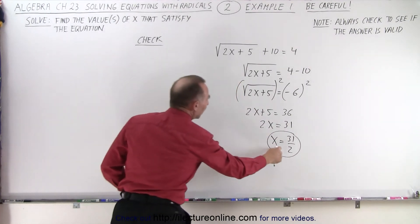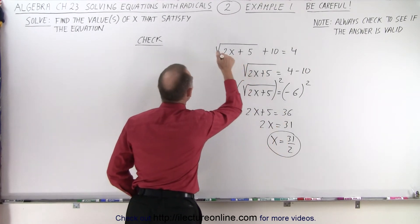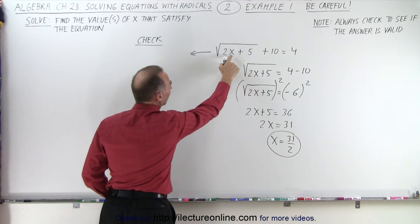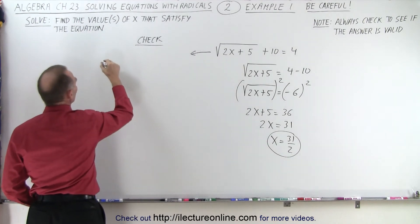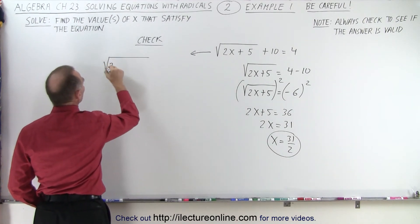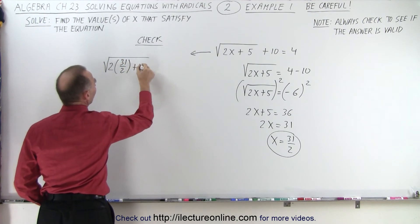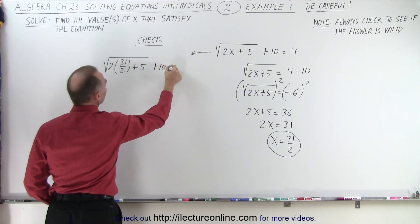How do we figure that out? We plug that back into the original equation. So we take the original equation, and instead of x, we're going to write 31 divided by 2. So here, we have the square root of 2 times 31 divided by 2 plus 5 plus 10 equals 4.